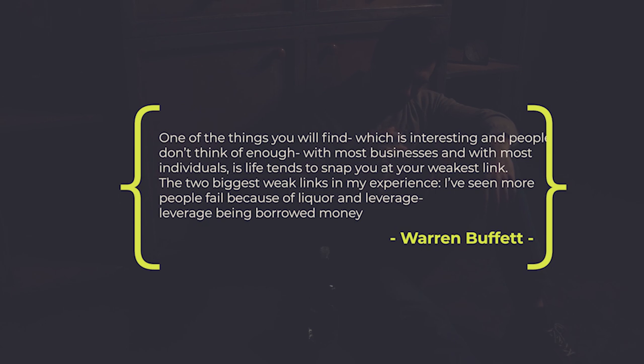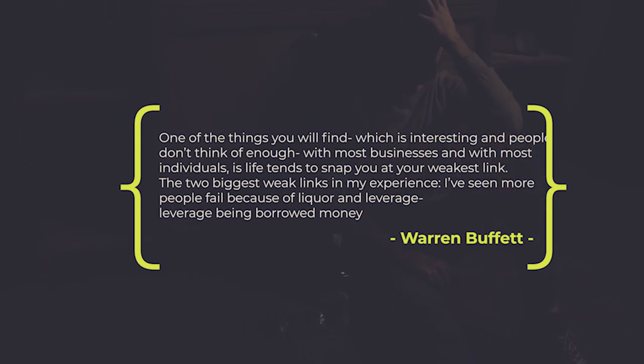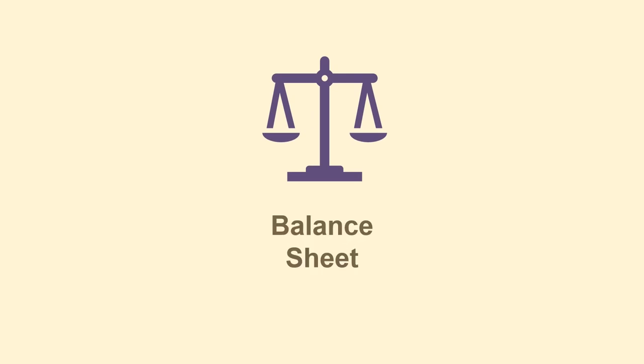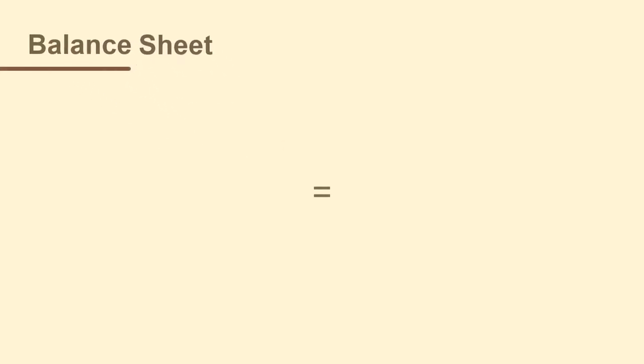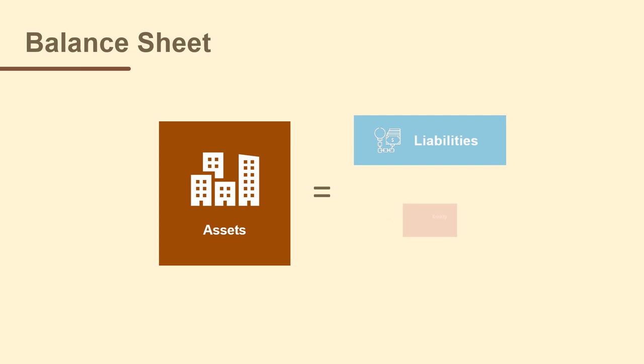"One of the things you will find is that with most businesses and with most individuals, life tends to snap you at your weakest link. The two biggest weakest links in my experience: I've seen more people fail because of liquor and of leverage — leverage being borrowed money." — Warren Buffett. The balance sheet shows a company's resources — its assets — and how those resources were funded — liabilities and shareholders equity — on a particular date. Think of the balance sheet like a snapshot of a point in time. This is the famous accounting equation: Assets equal liabilities plus shareholders equity. It's a balance sheet because it needs to balance, which is why we do double entry accounting.